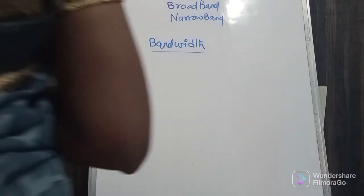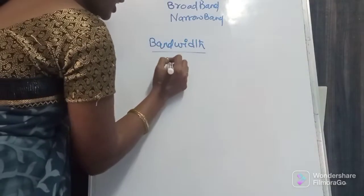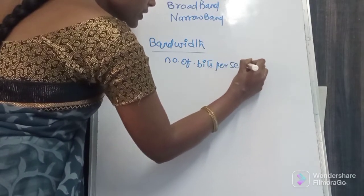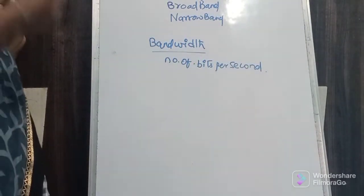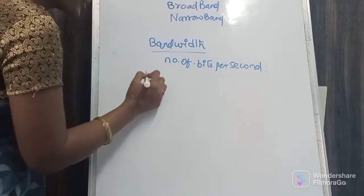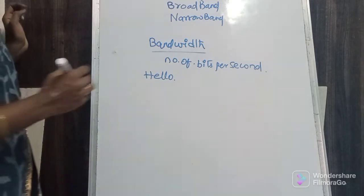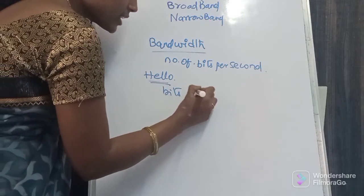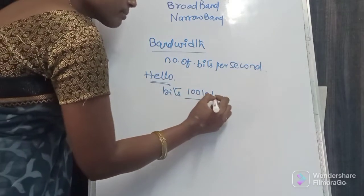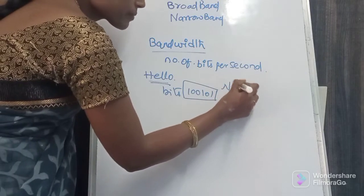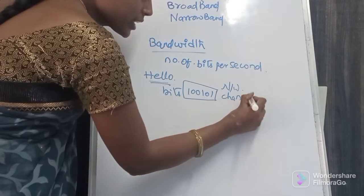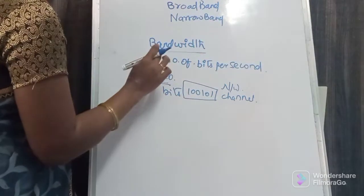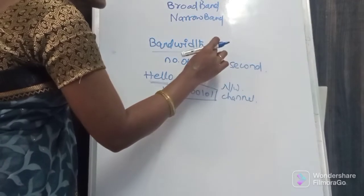Bandwidth is a term which indicates how many number of bits are going to transfer per second. That means, a network — how much speed it can send the bits. For example, you want to send a message to your friend: 'hello'. This hello is not transferred in the same manner; it will be transferred in the form of bits — ones and zeros format. This message can be transferred through a network using a channel. How much speed these bits are transferring to the receiver is called the number of bits per second. This is called bandwidth.